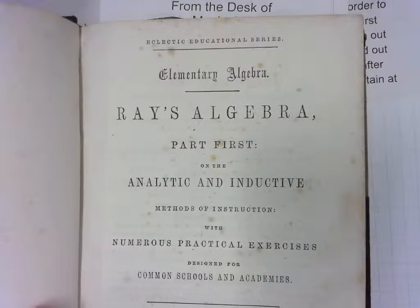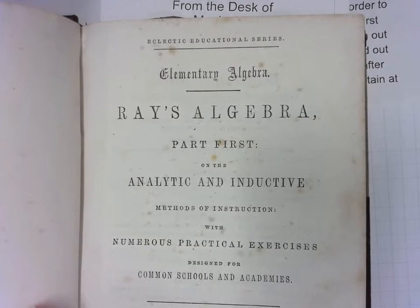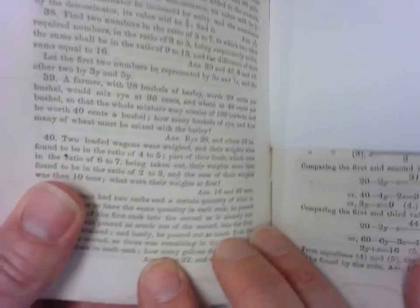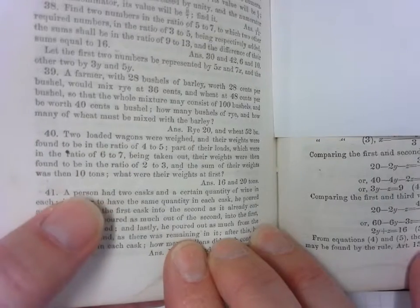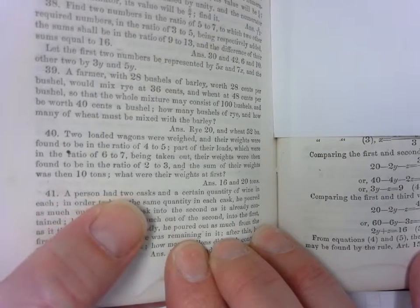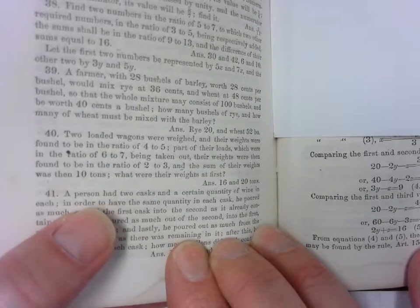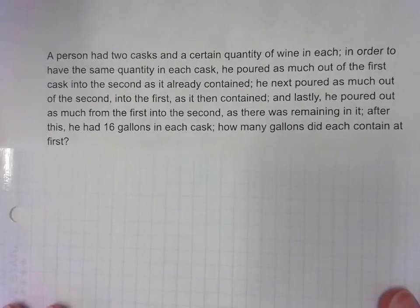All right, I'm going to do a problem from Ray's Algebra. This is a copy written in 1848 and this book contains a story problem or probably many story problems that you would never see in a current modern algebra book. And this one comes in later in the book and it says that we have a person with two casks of wine. So they have a certain quantity of wine in each one. So you'll never see a story problem about casks of wine in a current modern algebra book.